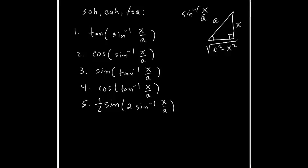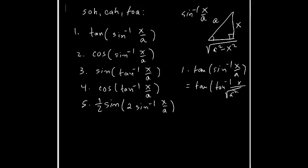For problem one, tangent of sine inverse x over a is equivalent to tan⁻¹ of opposite over adjacent, which is x over √(a² - x²). Since tan and tan⁻¹ cancel out, your answer is just x over √(a² - x²). You are done for problem one.